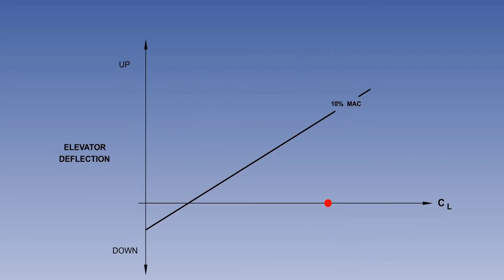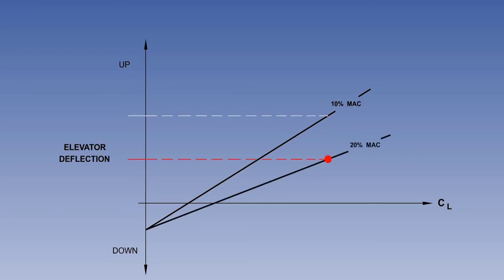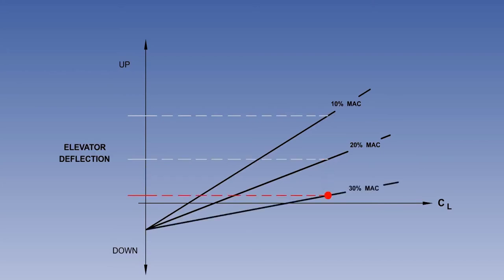We can now consider the effect of CG position on elevator deflection. The vertical axis of the graph now represents elevator deflection. With the CG at 10% MAC, the aircraft has a lot of longitudinal static stability and a large up-elevator deflection is required to maintain a given lift coefficient. With the CG further aft at 20% MAC, there is less longitudinal static stability and less up-elevator is required. With the CG even further aft at 30% MAC, still less up-elevator is required to hold the same lift coefficient.